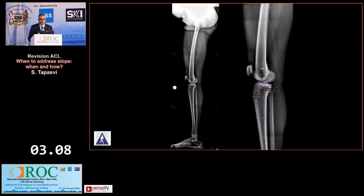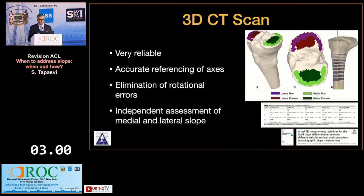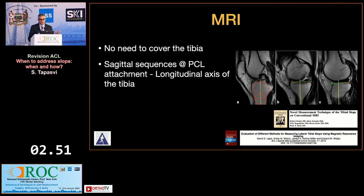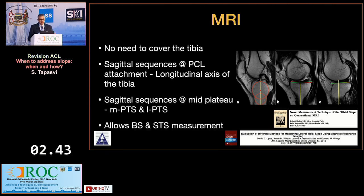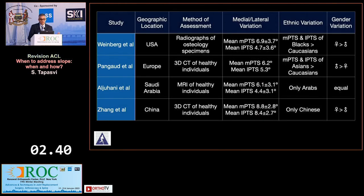I use digital planning — a marker is important and it uses the same measurement method allowing you to plan your calculation. CT scans are very reliable, eliminating rotational errors, and allow estimation of medial and lateral slope separately, as does MRI, though additional measurements are needed. There is large geographical variation, and in this part of the country something around 9 or 10 degrees by the TPAA method is taken as standard.